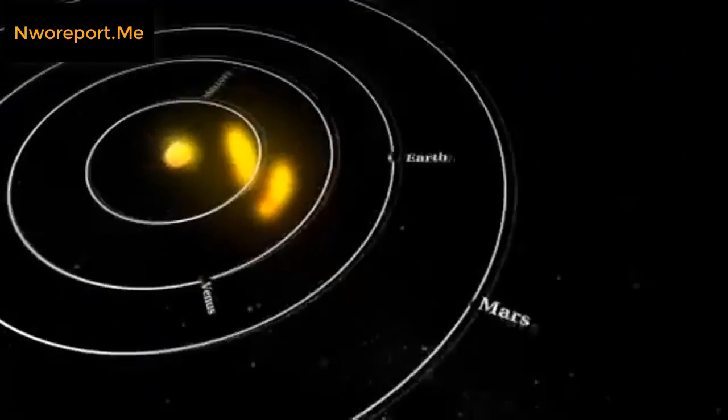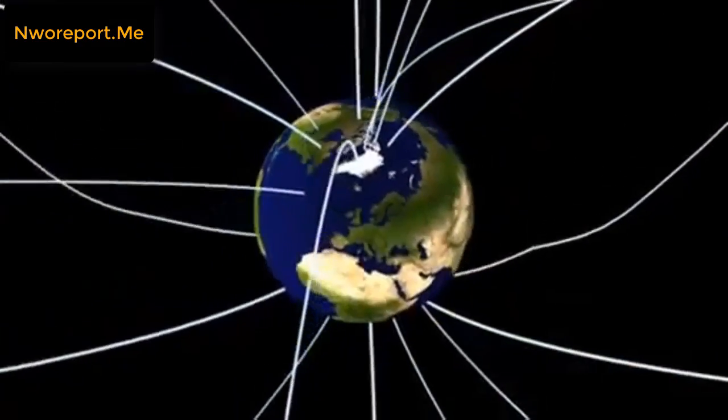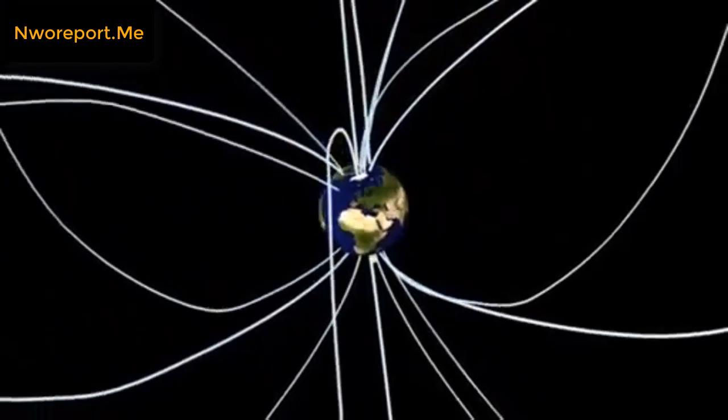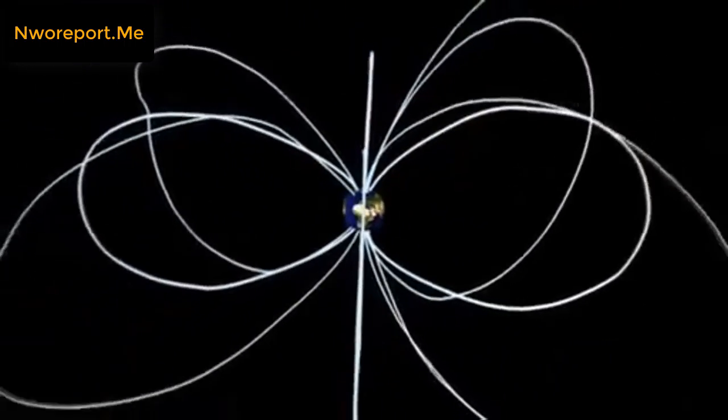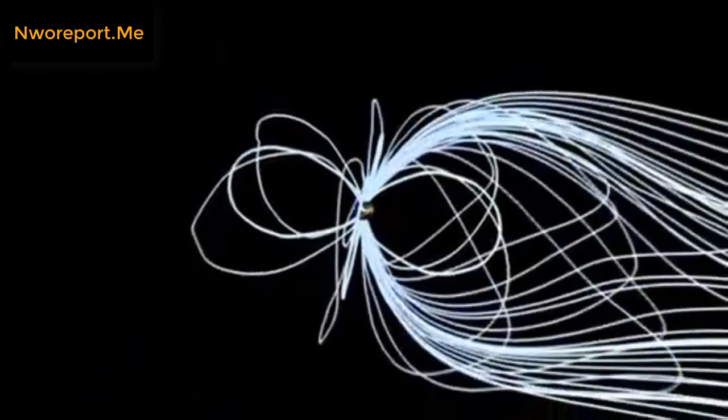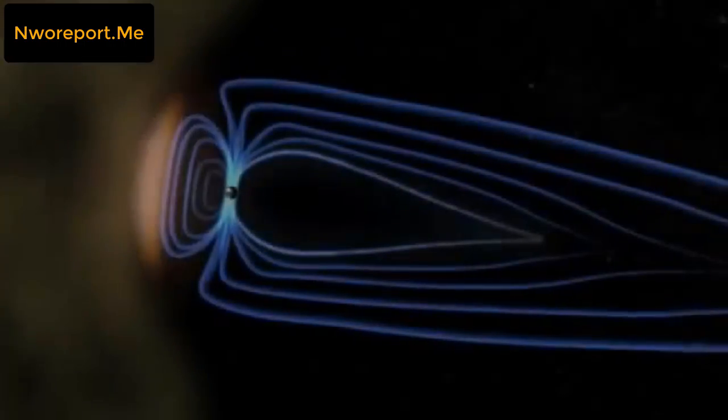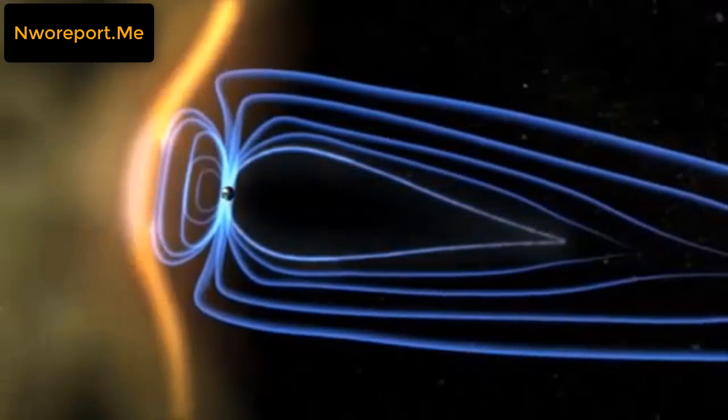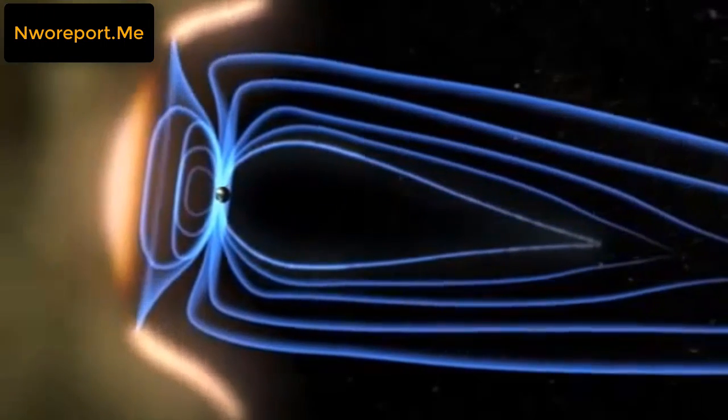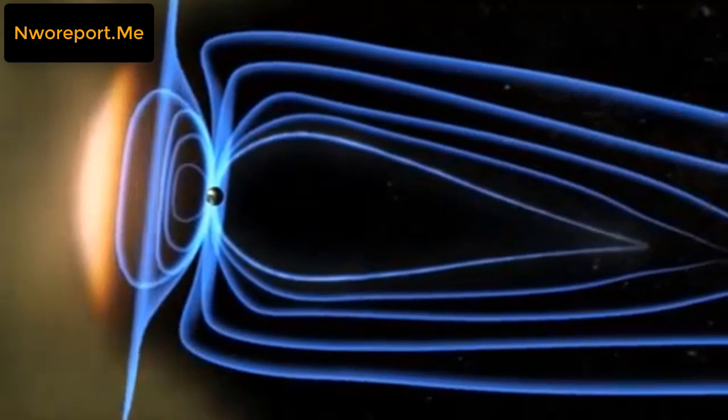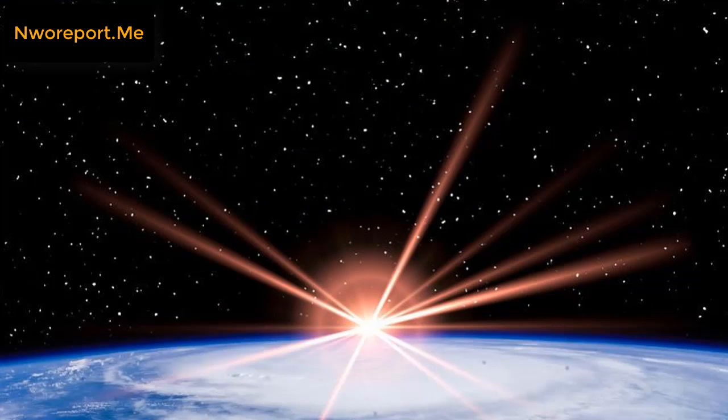So long story short, without going into too much technical detail, our magnetic field is weakening and it's accelerating faster and faster. And if it doesn't slow down anytime soon, or even if it picks up, we could have a pole shift that will cause cataclysmic damage to this planet.